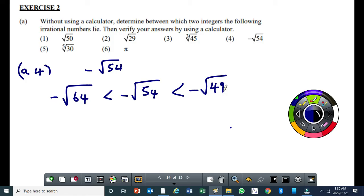Then we know that square root of 64 is 8, so this becomes minus 8 is less than minus square root of 54 is less than minus 7. You know that from your knowledge of integers that minus 8 is less than negative 7 from your grade 8 and 9. You did integers.